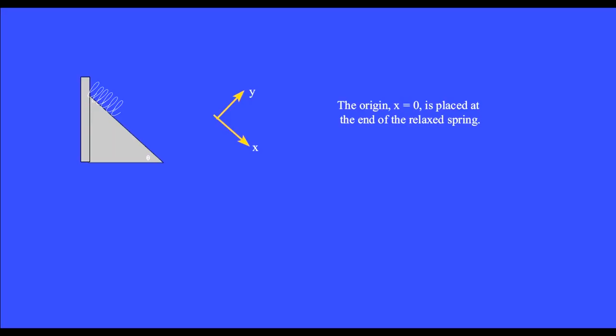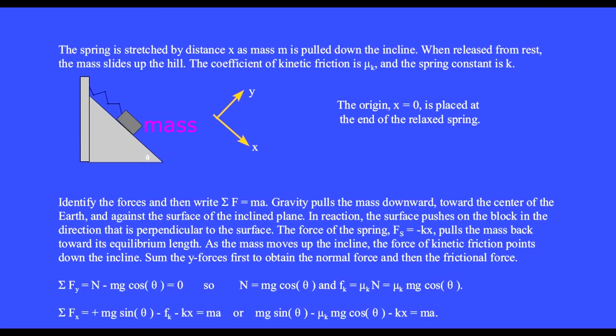This spring has been placed on the incline plane. This is its relaxed length. We put the origin, x equals zero, at this end of the spring.